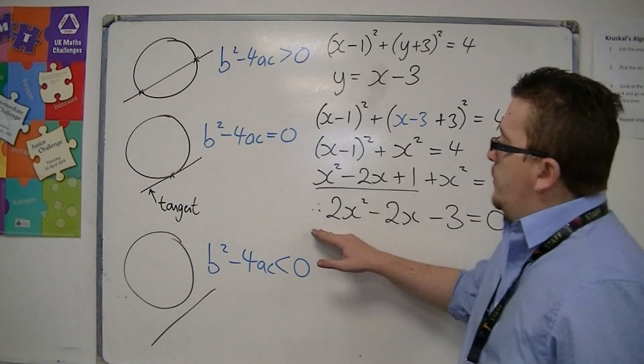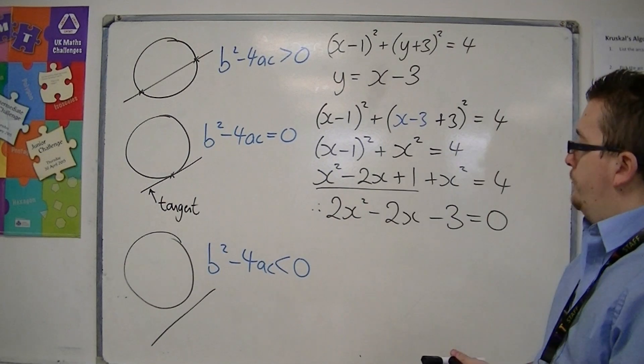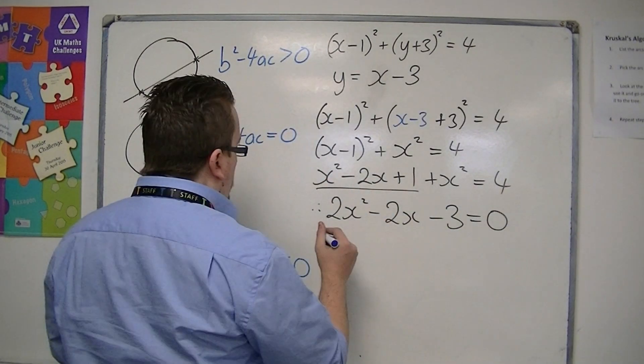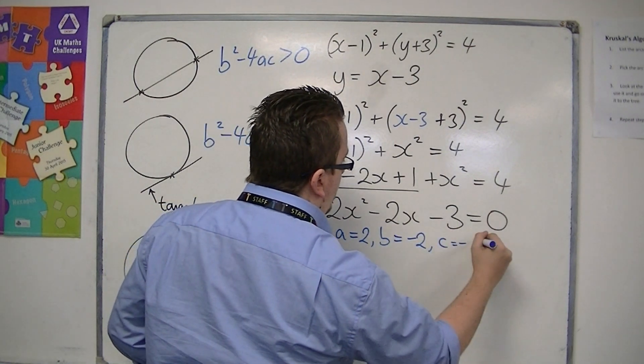So we need to evaluate the discriminant of this quadratic equation. So a is two, b is minus two, and c is minus three.